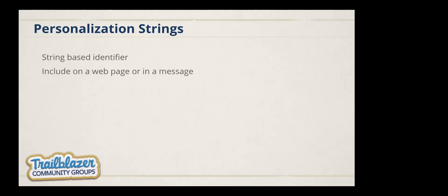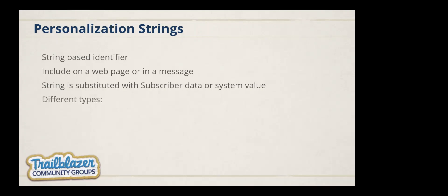Before we do, I want to discuss personalization strings. Most digital marketing platforms offer personalization strings, which may be referred to as merge fields, merge tags, or substitution strings depending on the platform. This support allows a string-based identifier enclosed in a delimiter to be included on a page or in a message. When the content is published or sent, the string is substituted with subscriber data or a system-defined derived value. Marketing Cloud supports two types of personalization strings: attribute-based and system-based.